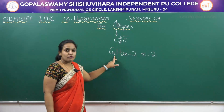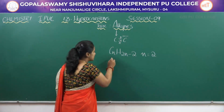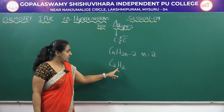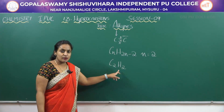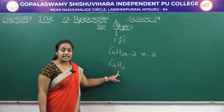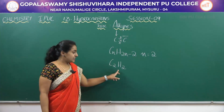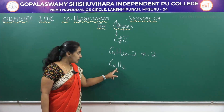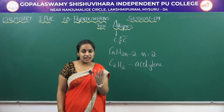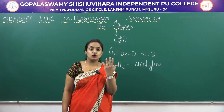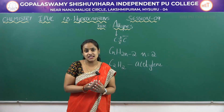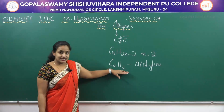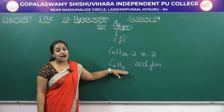If we give the value of N as 2, the first compound will be C2H2. The first member of the alkyne family is called ethylene or acetylene. Usually alkynes are odorless.